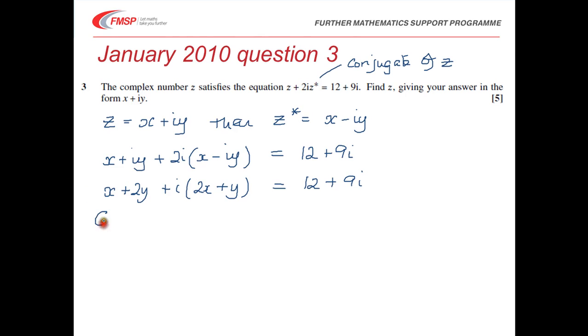So let's do this. So equating real and imaginary parts, what do we get? So if we take the real parts first of all, then on the left we've got x plus 2y, and on the right we have 12. And if we look at the imaginary parts, then on the left we have 2x plus y, and on the right we have 9.